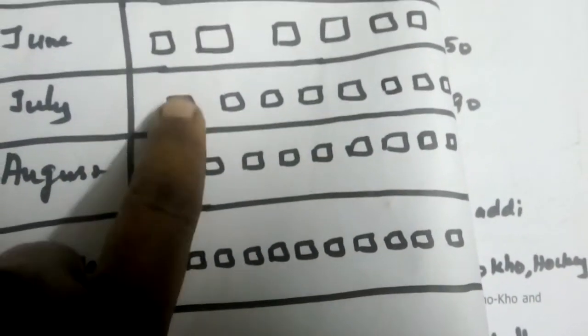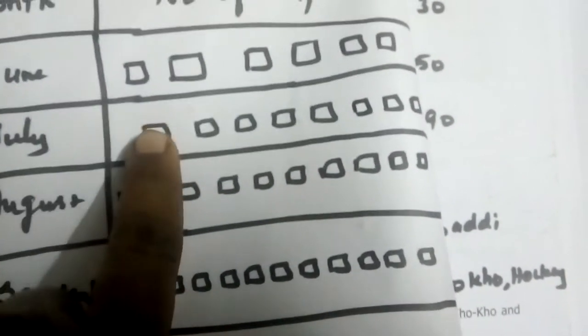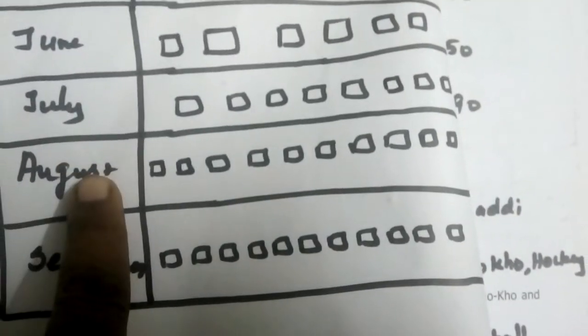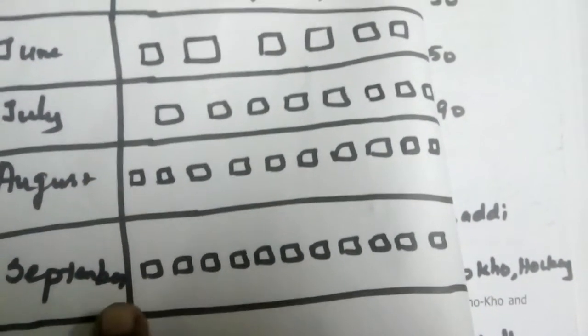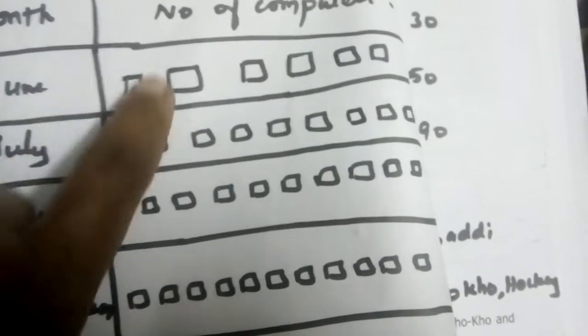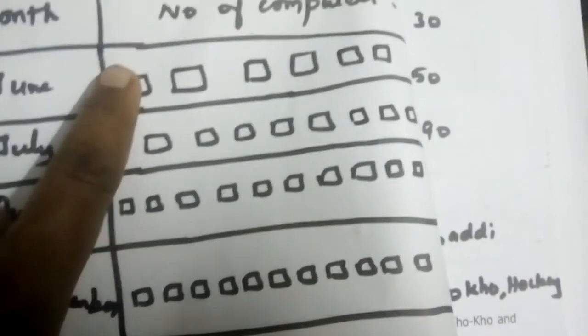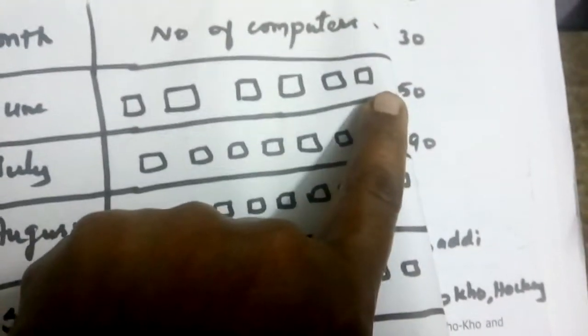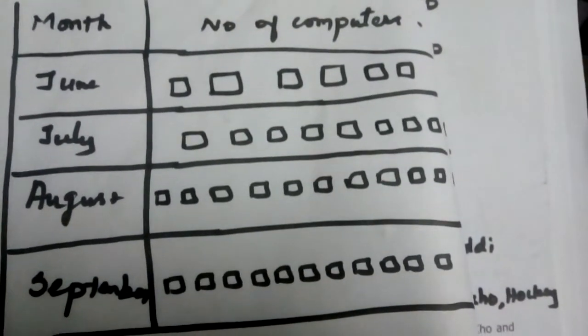In the month of July it is 450. So how many 50s fit into 450? For 450, draw nine computer pictures. Similarly draw for August and September. Since we cannot draw a whole computer, we can just draw one box to represent it. So we are showing the data in terms of pictures — this is called a pictograph.